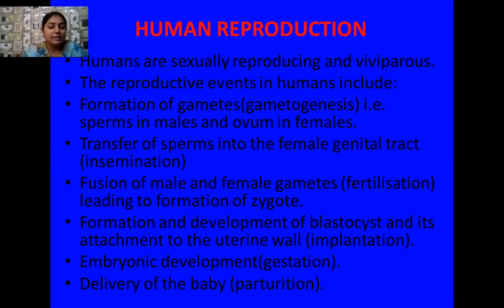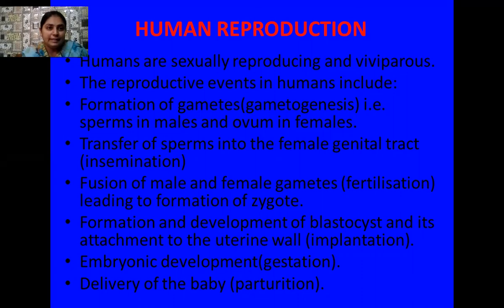The reproductive events include: number one, formation of the gametes, which is known as gametogenesis. Sperms are formed in males in their respective reproductive organs — the testes — and ovums are produced in females in their reproductive organs — the ovaries. Next is the transfer of sperms into the female genital tract, and this process is called insemination.